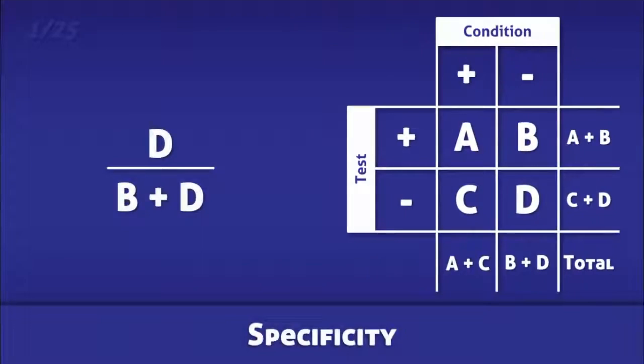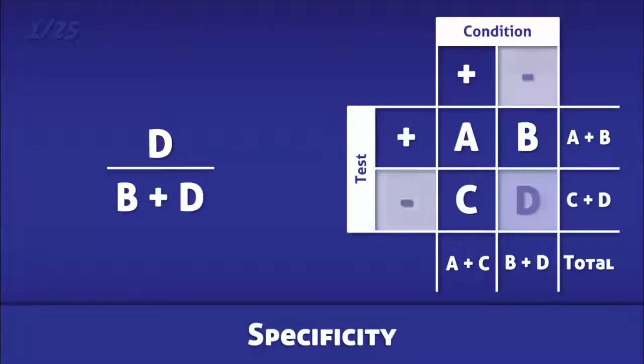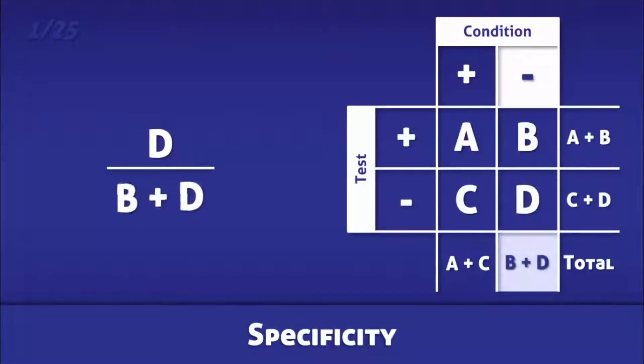Specificity is the ability of a test to identify individuals who do not have a particular disease. It is calculated by dividing the number of true negatives by the total number of people without the disease of interest.